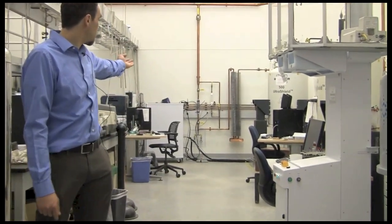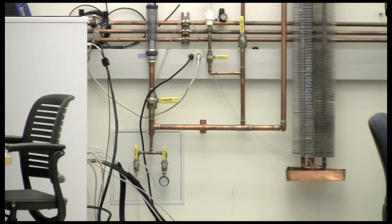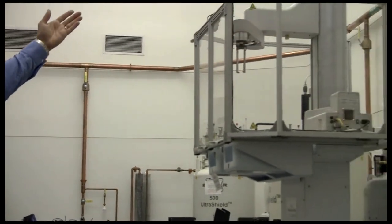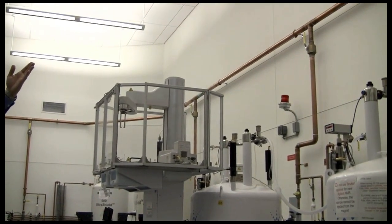The recovery system consists primarily of a series of manifolds, which are then attached to a header pipe along the wall. This header pipe routes the helium over to our liquefier system, which is in the basement of the adjacent building.